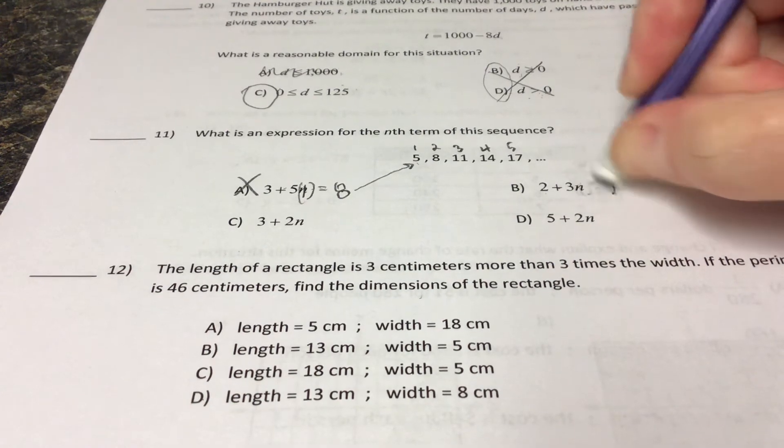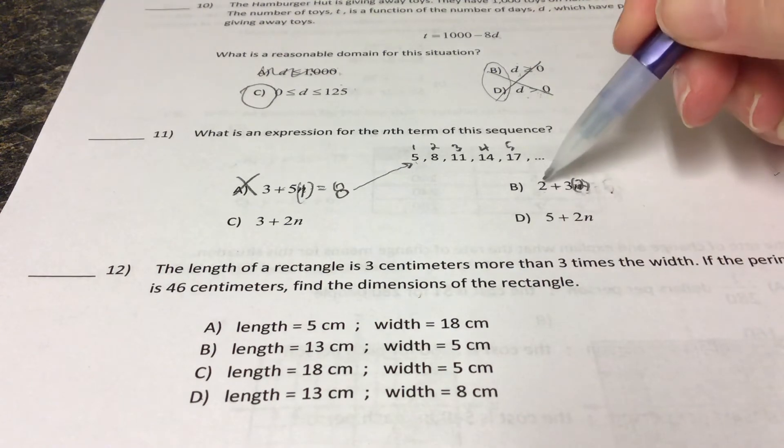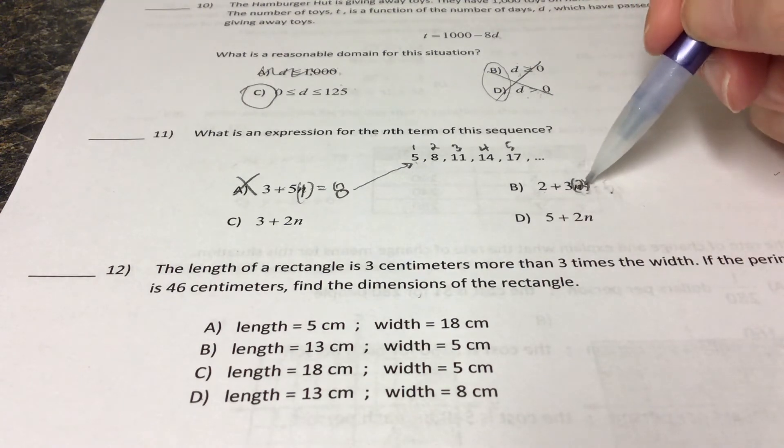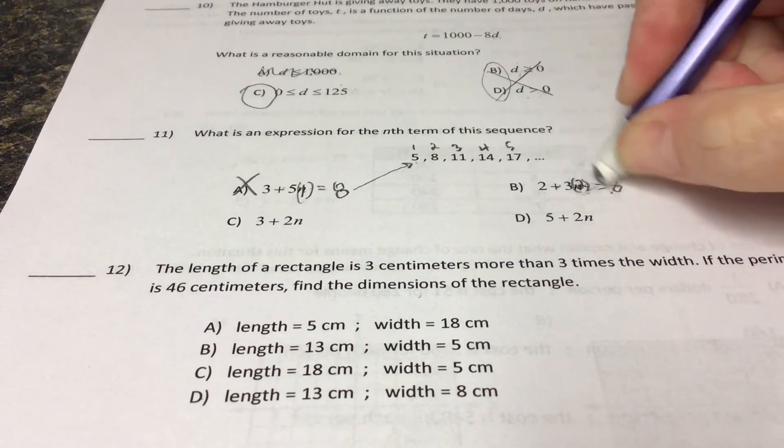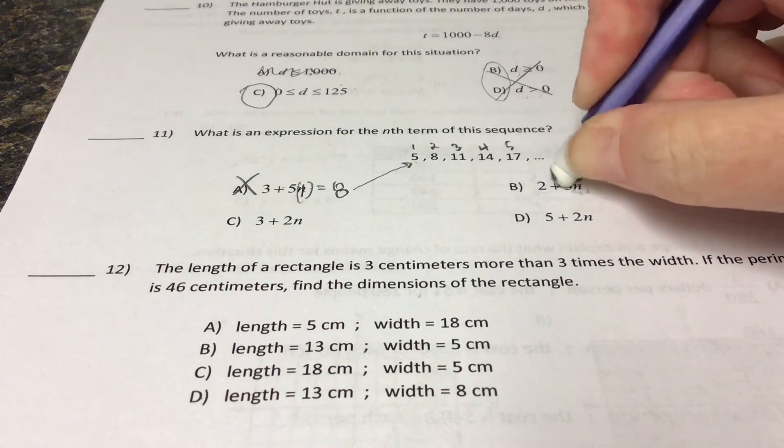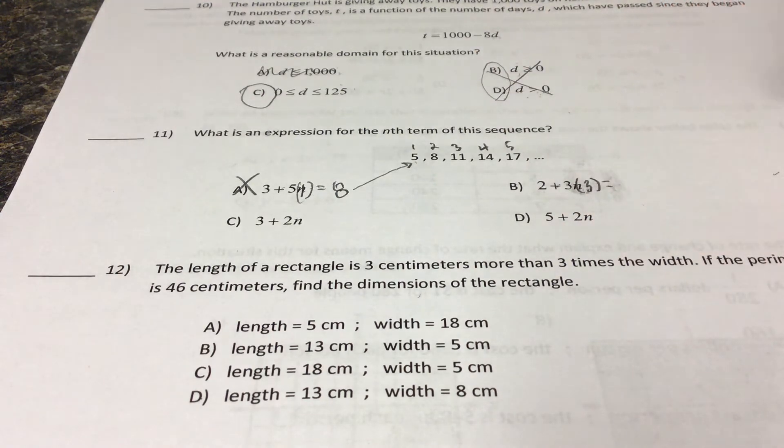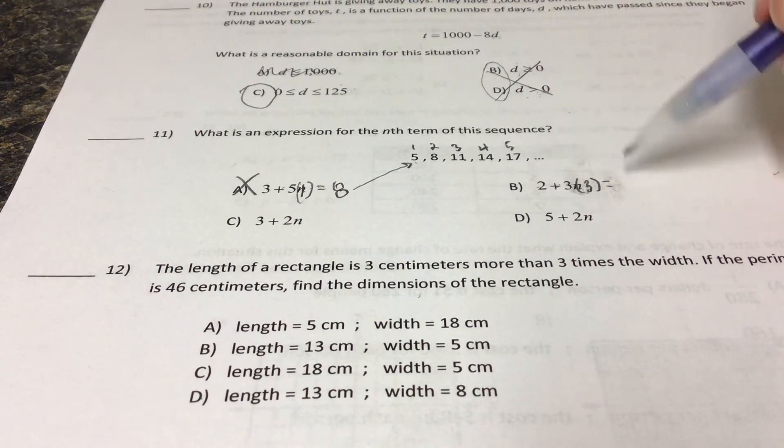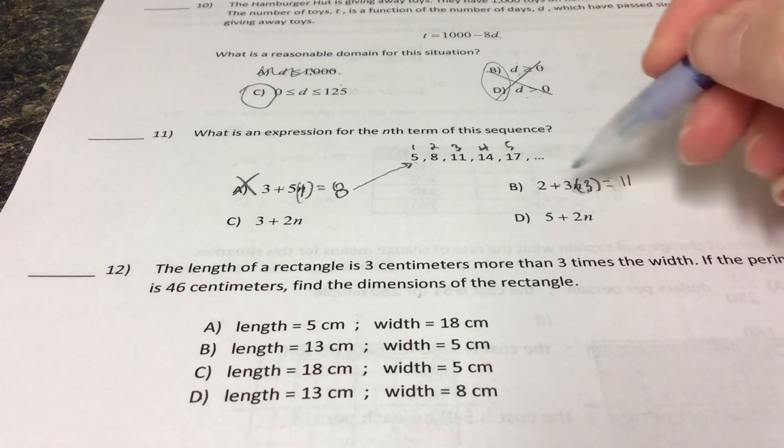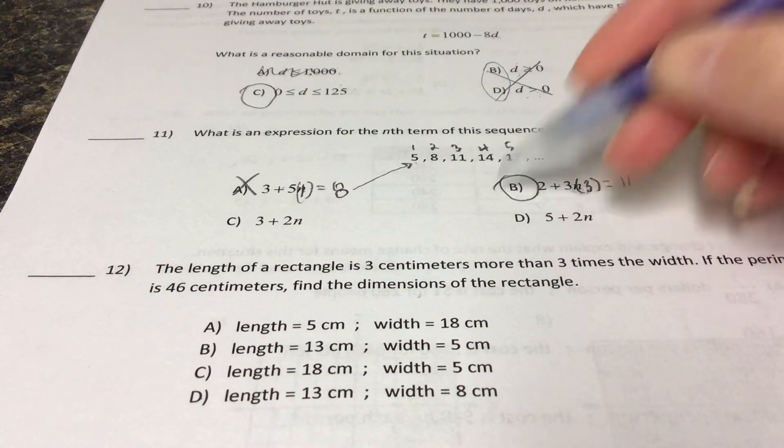So what you would have to do is check the second one. If we went two plus three times two, that's eight, right? We'd want to check a couple down the road here. So if I put in three, I should get the third term in the list. I should get eleven. Three times three is nine, plus two is eleven. This one looks like it's working out. If I put four in there, I'm going to get fourteen. B is our answer.